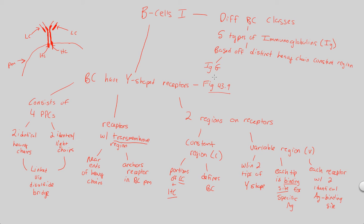The five immunoglobulin types are IgG, IgA, IgM, IgE, and IgD. Each B-cell class has a distinct receptor — the IgG B-cell receptor looks different from IgA, which looks different from IgM, and so on. These five B-cell classes produce five different types of immunoglobulins, which will eventually become antibodies — something we'll focus on in the next video when we discuss B-cell activation.